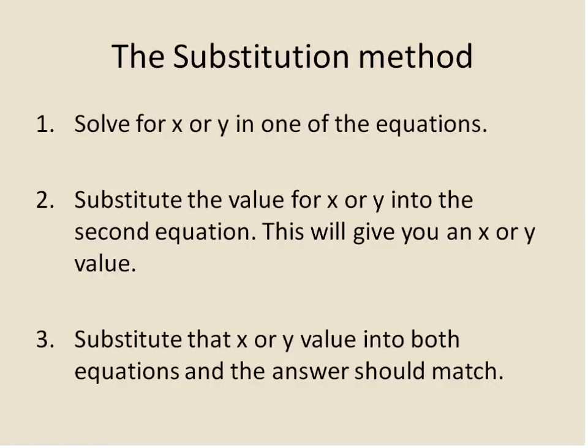The substitution method — here's the overall picture. First, you take your two equations and solve either one of them for a value of x or y. It doesn't matter which one. Then you substitute — hence the word substitution — that value into the second equation for the x or y. After you do that, you solve, you'll get a value for x or y, and then you substitute that into both equations and it should match.